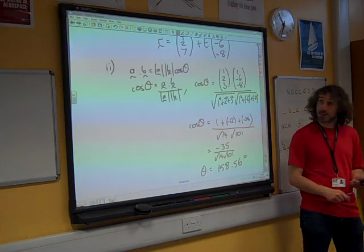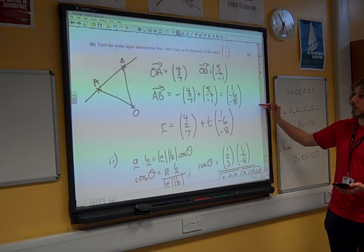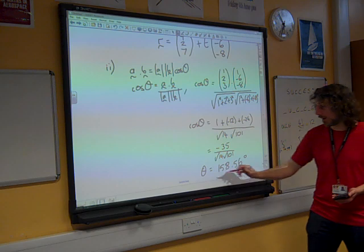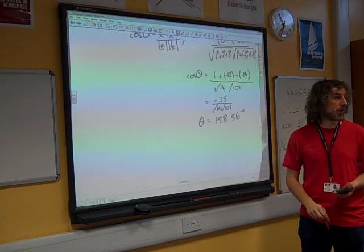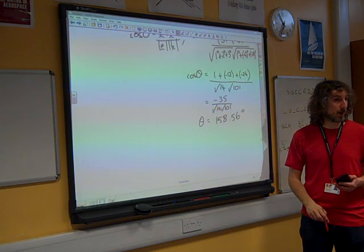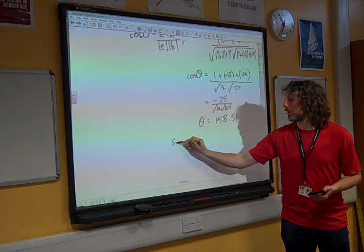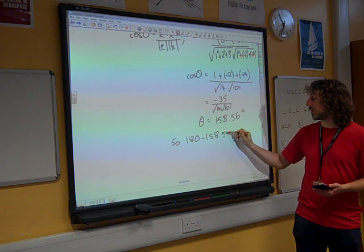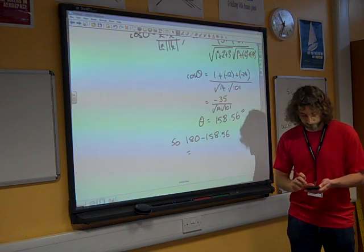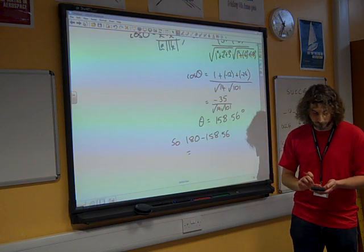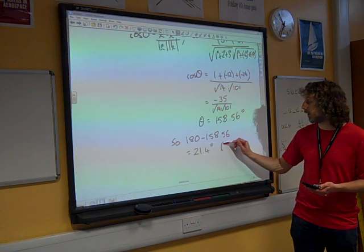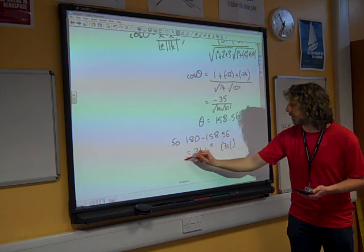And the question said, find the acute angle between the line and the direction vector. So, what we do, if that's the obtuse angle, we find the acute angle by doing 180 minus that. So, what we do, if we do that, comes out to be 21.4 degrees to three significant figures.